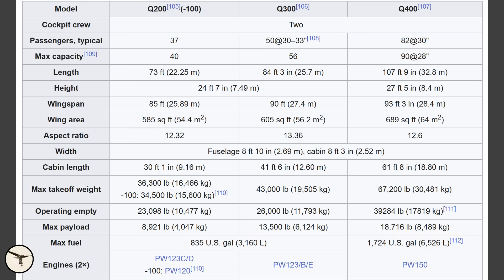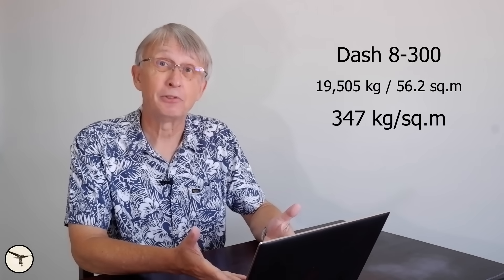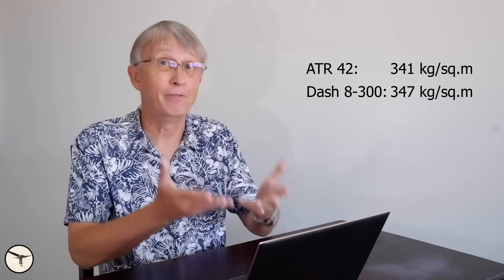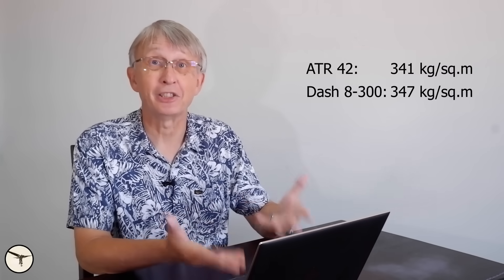Meanwhile the Dash 8-300, which also accommodates around 50 passengers, has a wing area of 56.2 square meters and a max takeoff weight of 19,505 kilos. And this results in a wing loading of 347 kilos per square meter. So they are very close to each other. In fact the Dash 8 has a slightly higher wing loading.